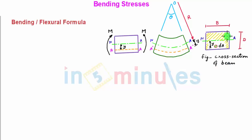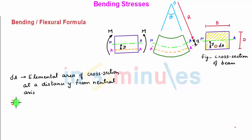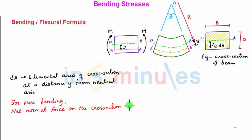Now let us consider the cross-section of the beam whose B and D are width and depth. Let us consider a small elemental area dA which is at the same vertical distance Y from the neutral axis. For pure bending, the net normal force on the cross-section will be equal to zero. The normal force on the cross-section is nothing but the longitudinal force when seen in this view.